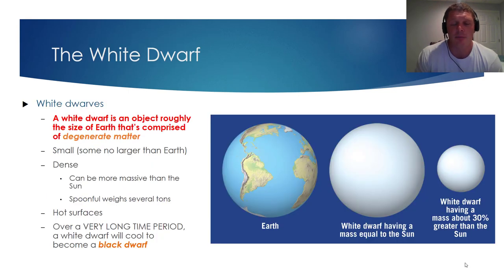I'd like to conclude this vodcast by going into a little bit more detail about white dwarfs. As previously described, a white dwarf is an object roughly the size of Earth that's comprised of degenerate matter. White dwarfs tend to be quite small, often no larger than planet Earth, but it's important to note that these stars are extremely dense. They might be Earth-sized, but they can be more massive than the sun. If you can imagine taking a spoonful of white dwarf dust, it would weigh several tons. That shows you how dense a white dwarf really is.